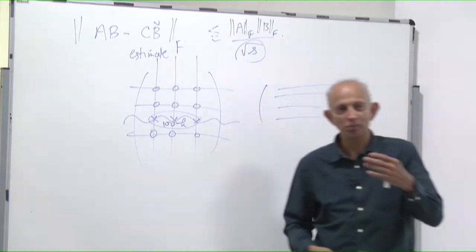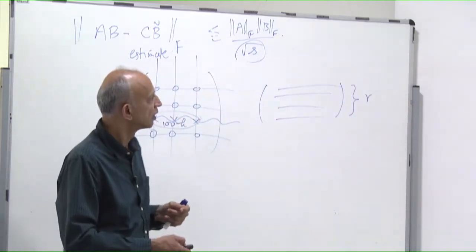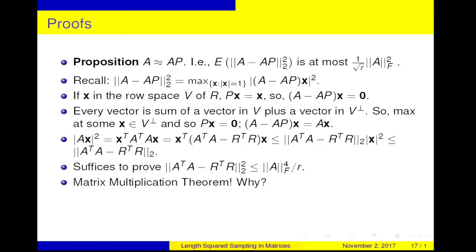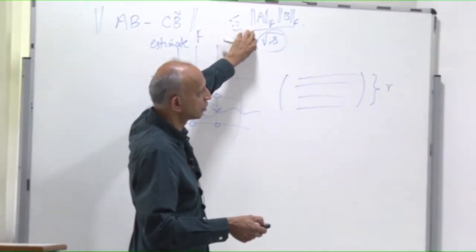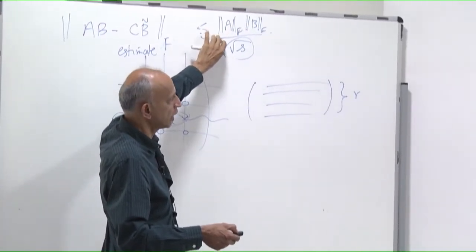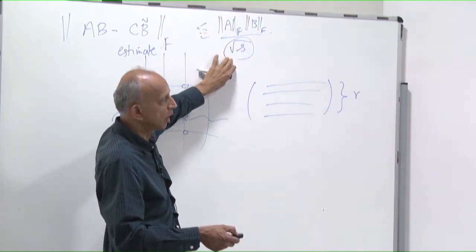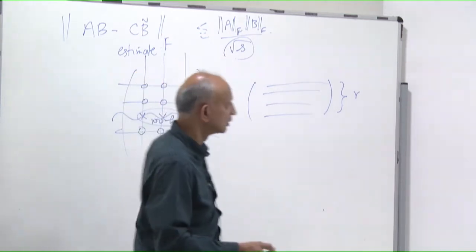I want to say A transpose A minus R transpose R is small. R is just a bunch of rows of A picked at random. This is small because of the matrix multiplication theorem: I am multiplying A transpose by A by sampling some columns of A transpose, which are rows of A — that's R transpose — and the corresponding rows of A, which is R. So this error is small because of the matrix multiplication theorem. The Frobenius norm of A squared appears to the fourth power divided by R.